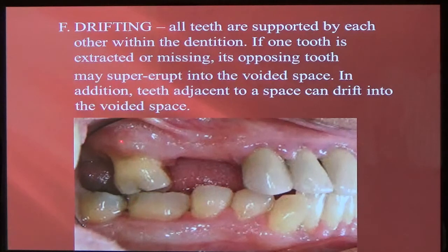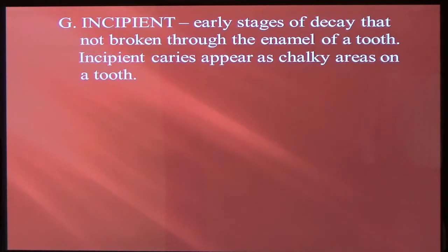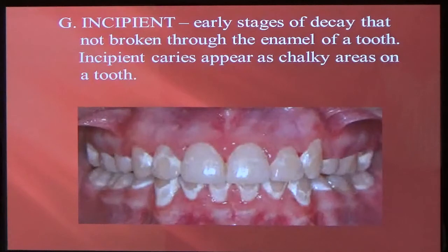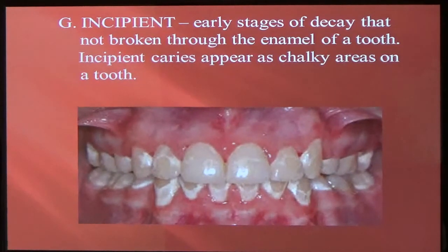If there's no teeth on the bottom, you get supereruption, where the tooth just drifts down into a missing space. Incipient is basically the beginning or early stages of something. Incipient decay is just basically decalcified enamel — white patchy areas that look like chalky areas, like when they take braces off. This patient didn't do too good a job of brushing their teeth, so you can see the brackets of the braces where they used to be — these are the beginning of cavities, incipient lesions.